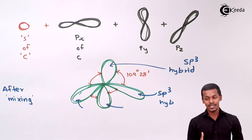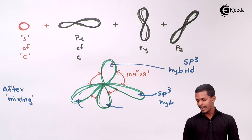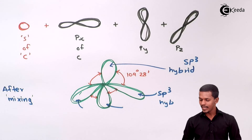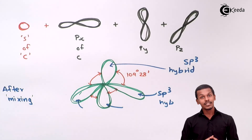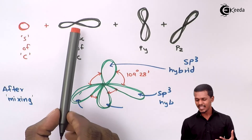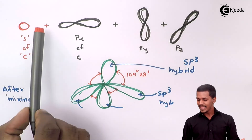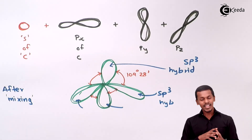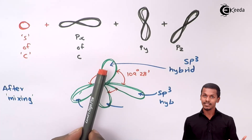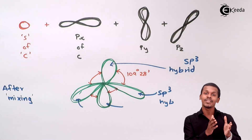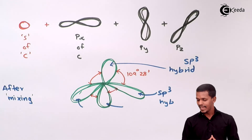Now, talking about energy levels: the s orbital and p orbitals originally have different energies. But after mixing, we cannot say one hybrid orbital is more energetic than another — every hybrid orbital formed has equal or equivalent energy. That is what we learned in the concept of hybridization.